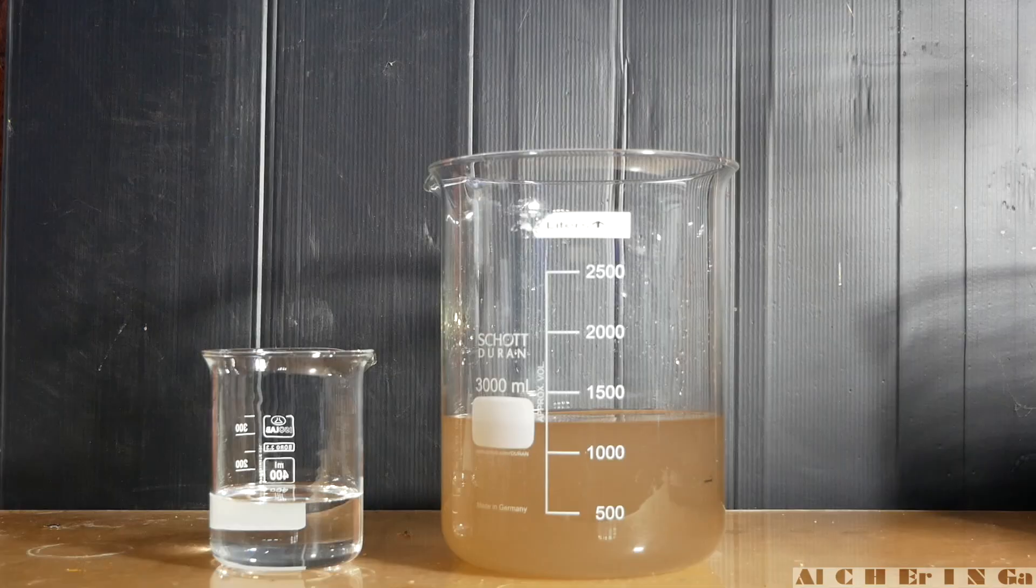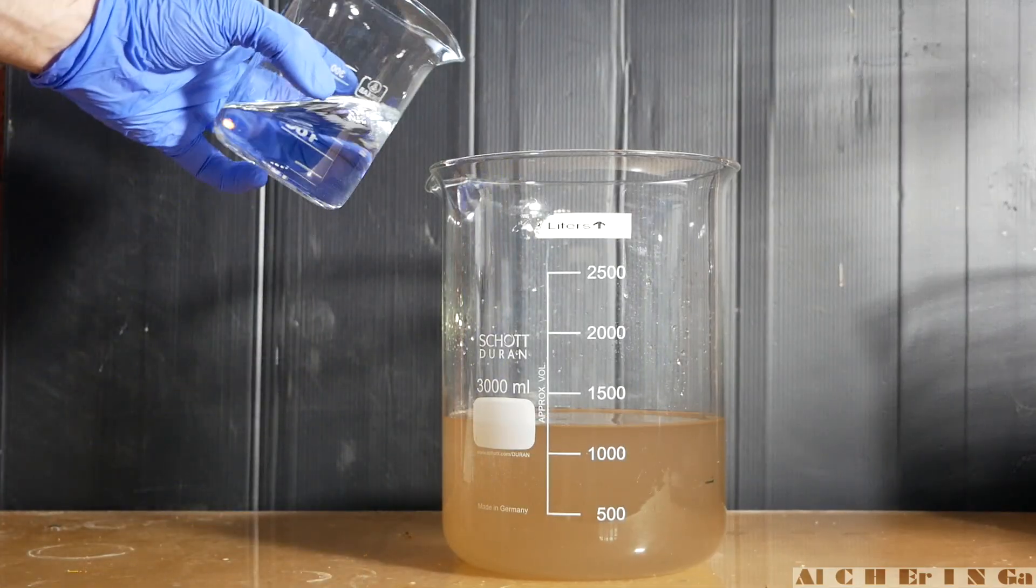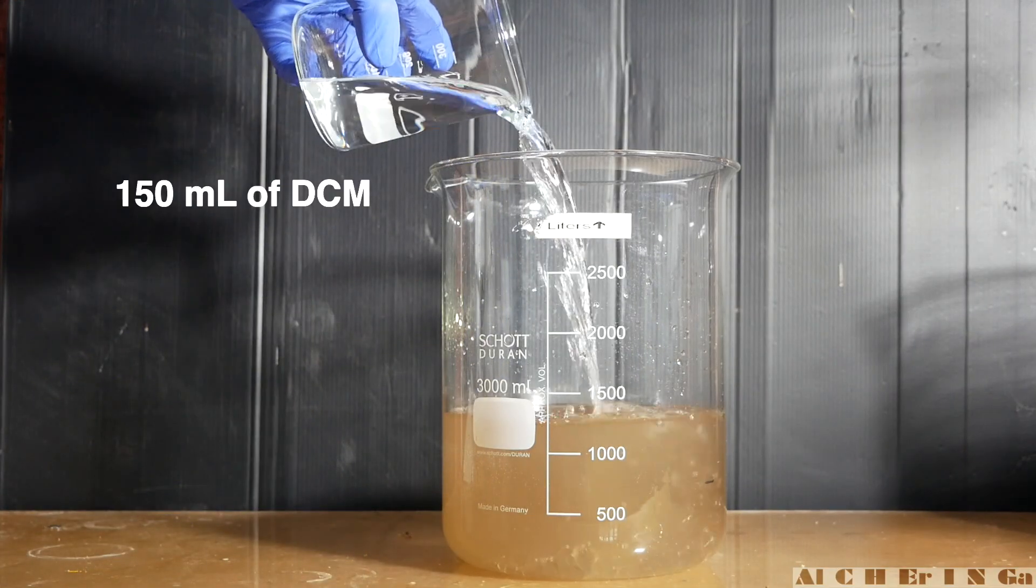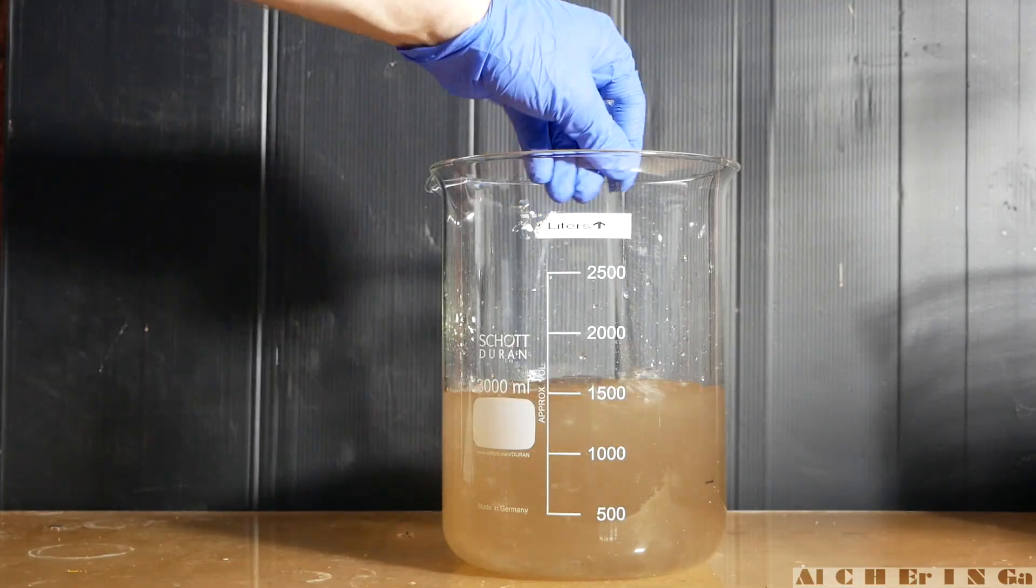Okay now, we need to extract the pacified mixture using dichloromethane. Add 150 milliliters of dichloromethane into the mixture and mix thoroughly.